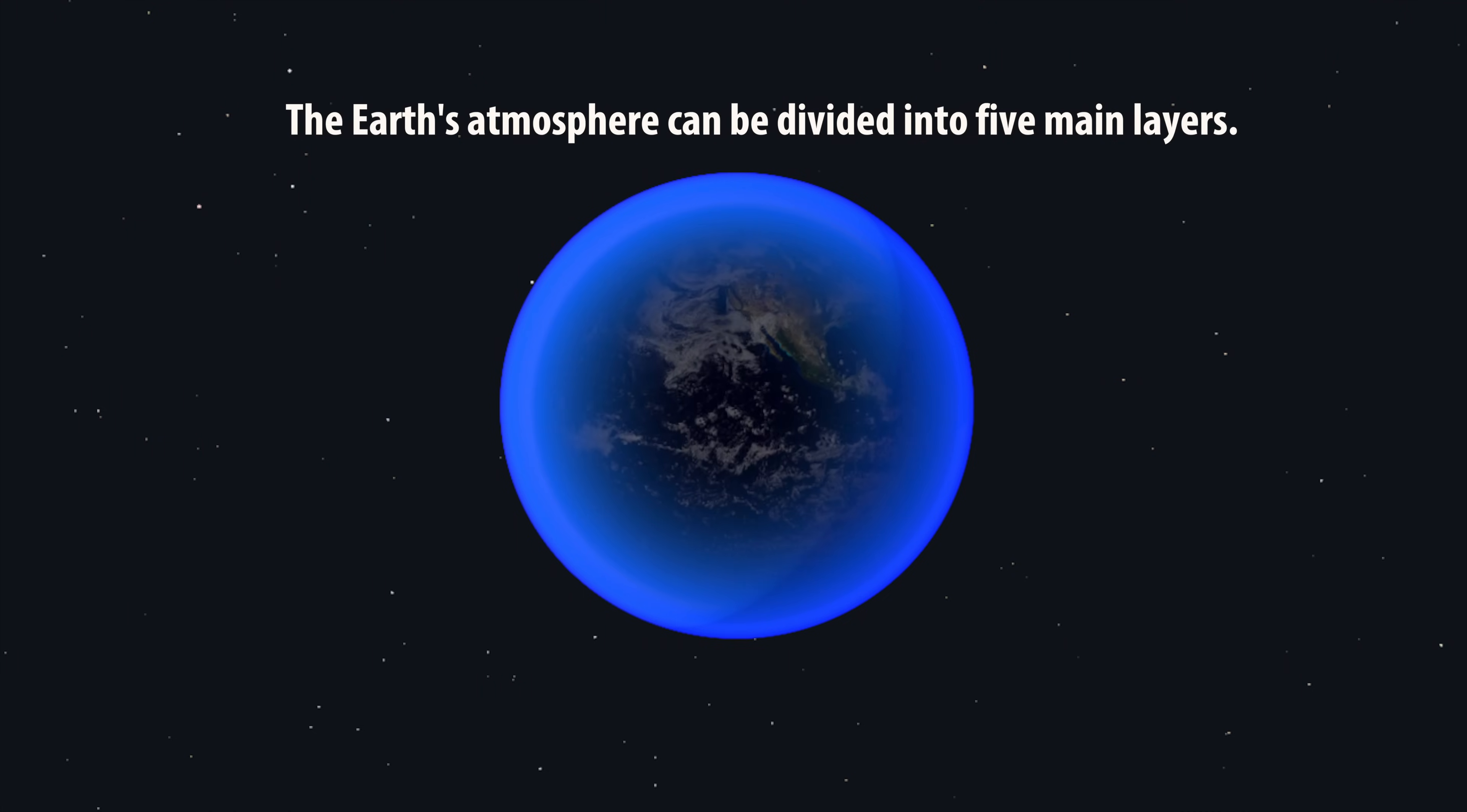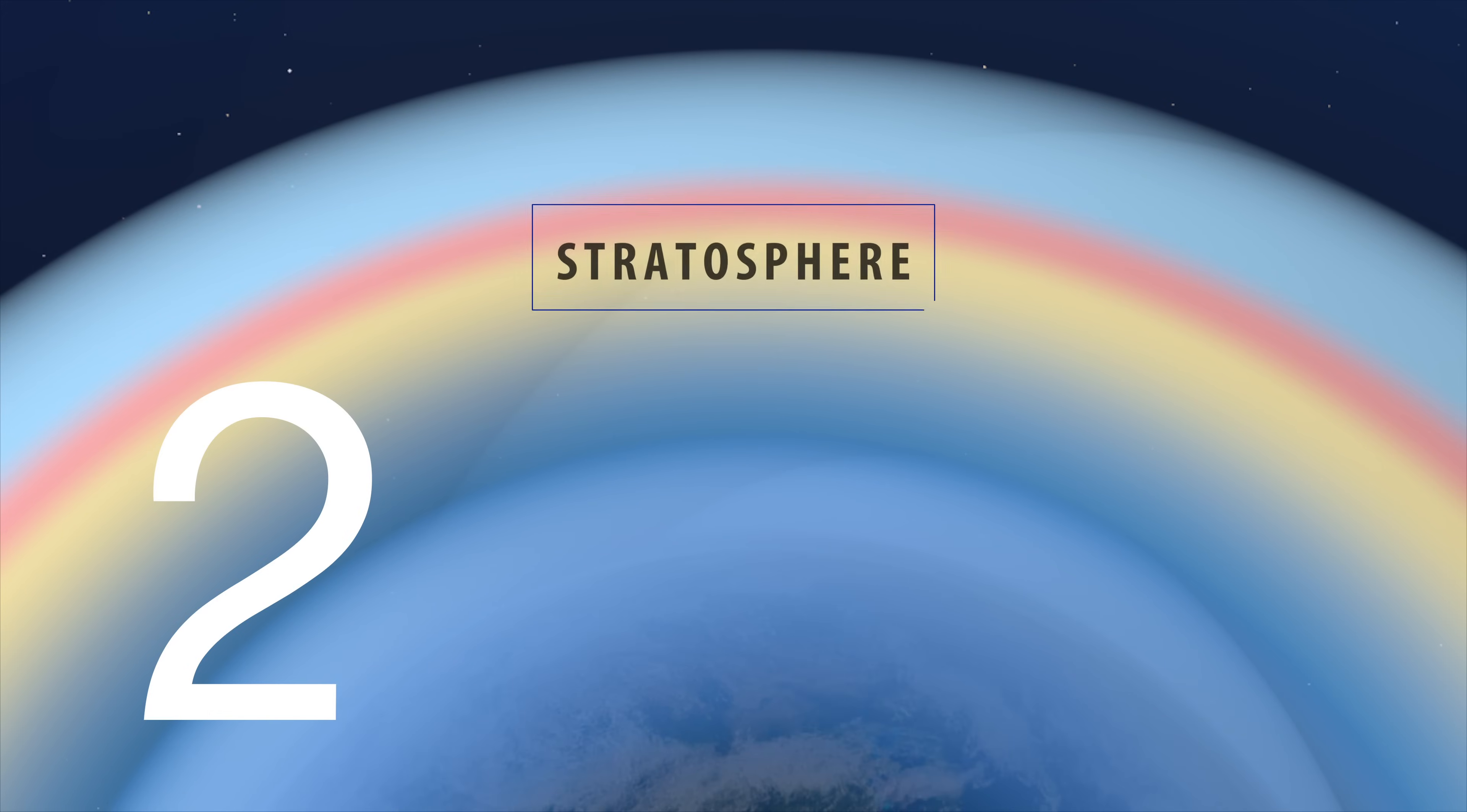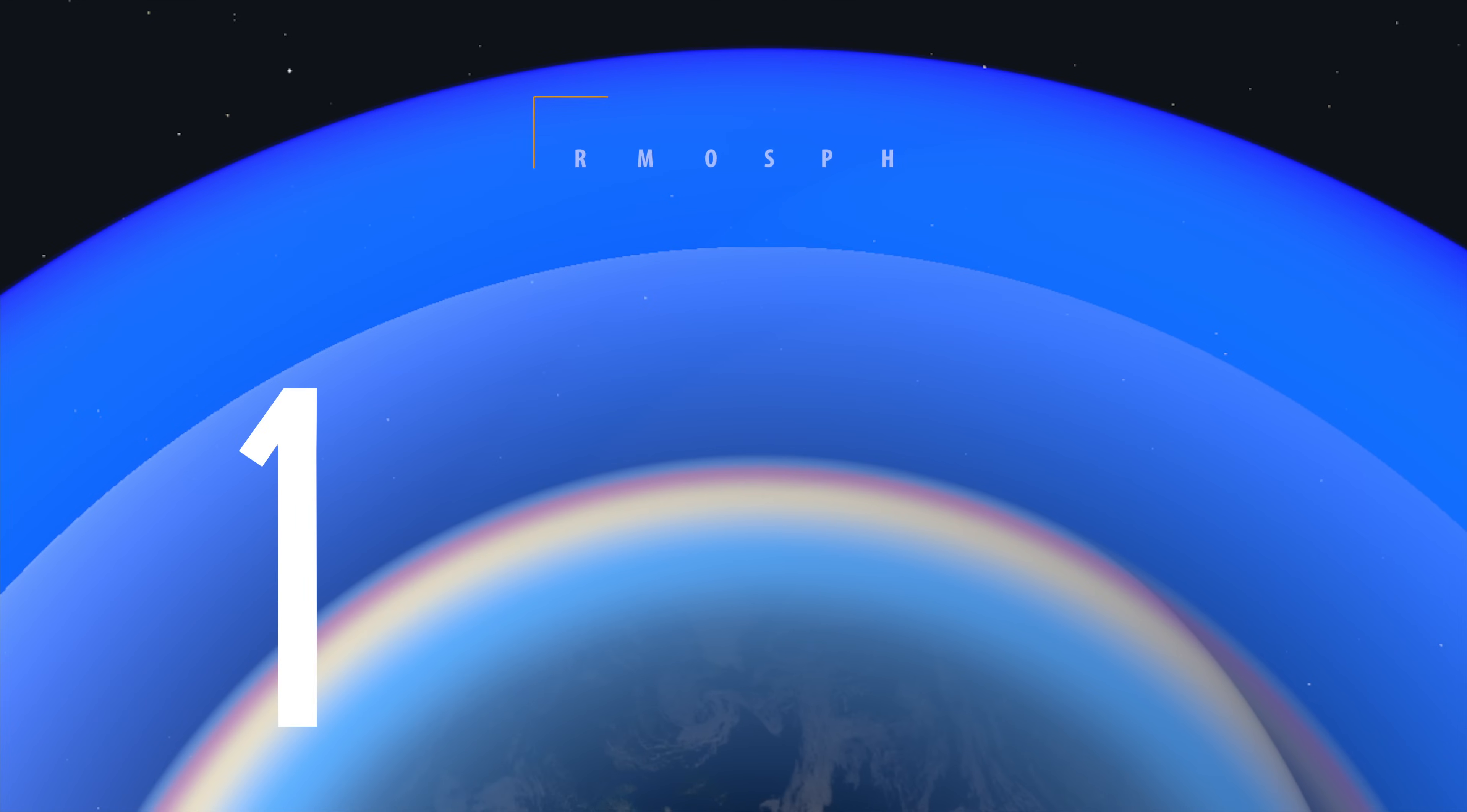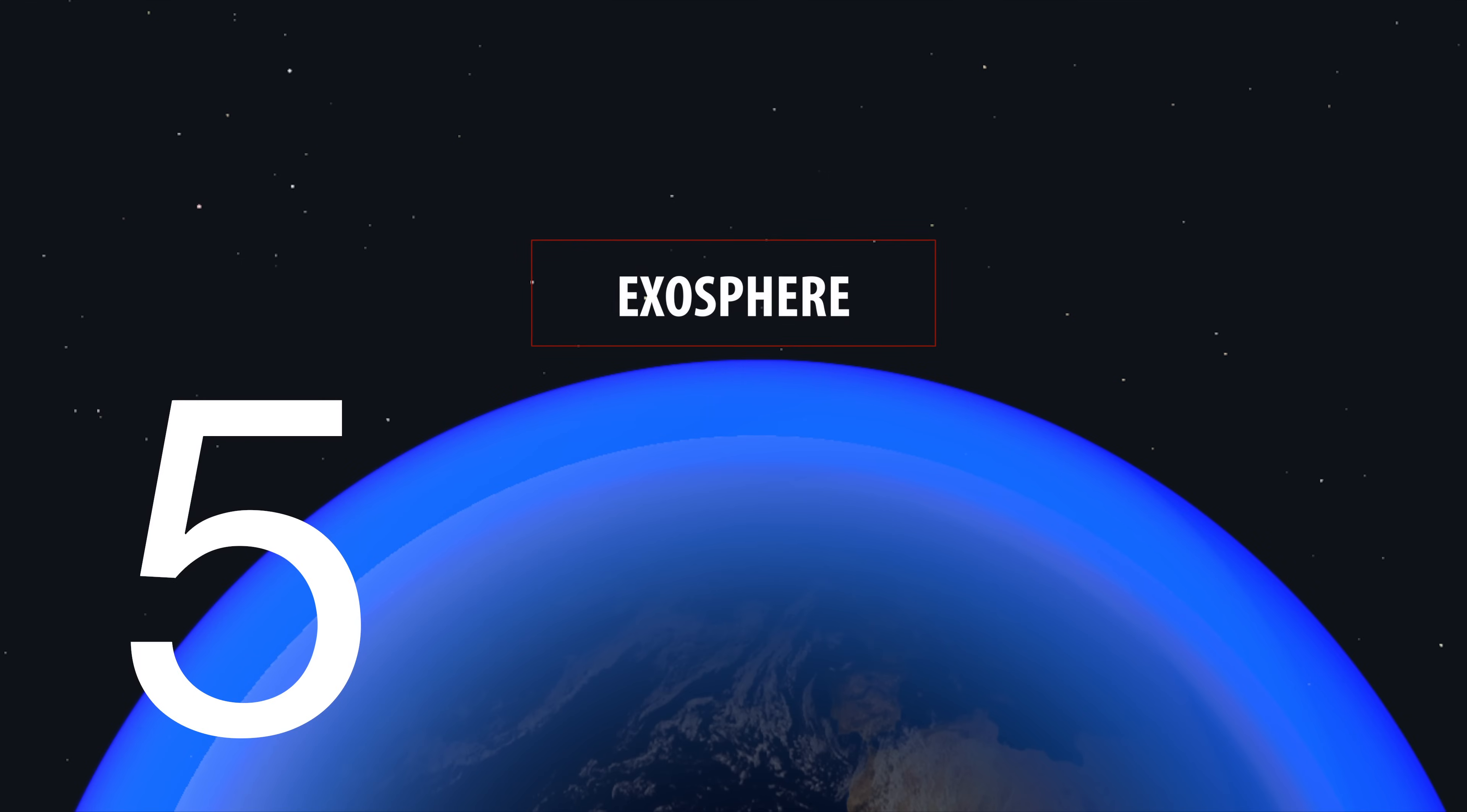Earth's atmosphere can be divided into five main layers. These layers are the troposphere, the stratosphere, the mesosphere, the thermosphere, and the exosphere.